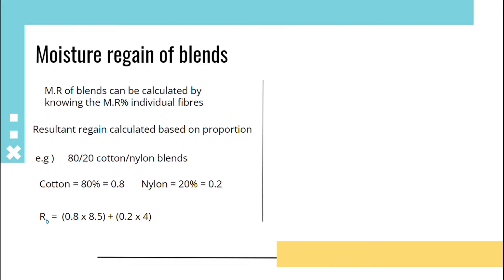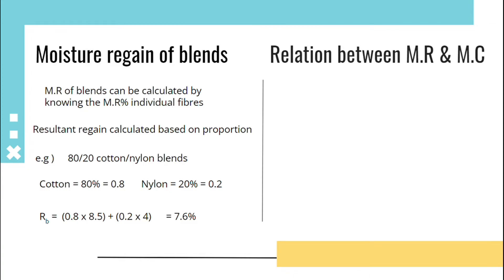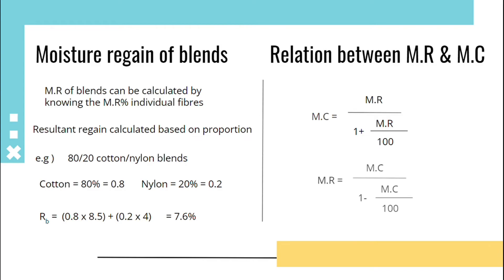That gives 7.6%. Relation between moisture regain and moisture content: Moisture Content = Moisture Regain / (1 + Moisture Regain/100). Moisture Regain = Moisture Content / (1 − Moisture Content/100).